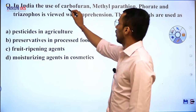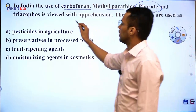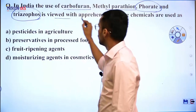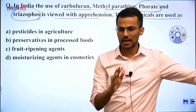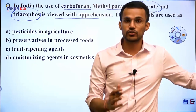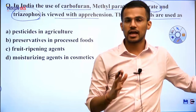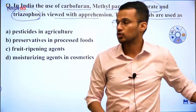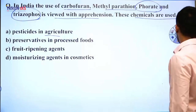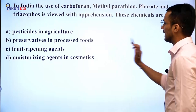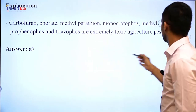2019 question: carbofuran, methylparathion, phorate, and triazophos are viewed with apprehension in India. These are extremely harmful pesticides used in the agriculture sector, and most states have banned their use. The answer is A — these chemicals are pesticides used in agriculture.